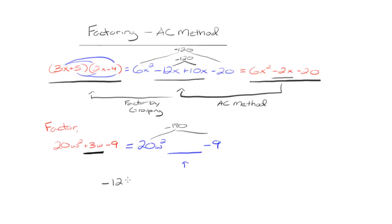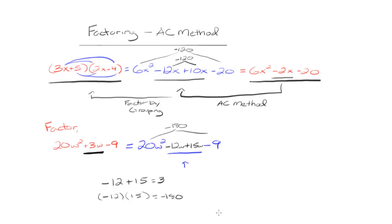We need two numbers that multiply to be negative 180 and add up to 3. Those two numbers are negative 12 and 15: negative 12 plus 15 equals 3, and negative 12 times 15 equals negative 180. So we rewrite the middle term 3w as negative 12w plus 15w.